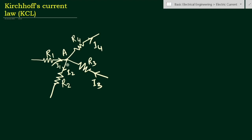In the fourth branch, resistance R4 has a current going outward from the junction point. According to Kirchhoff's law, the algebraic sum of these currents should be zero. This means the currents coming into the point equal the currents leaving the point. Currents entering the junction are positive, so I1 is positive. I2 is going outward so it is negative.